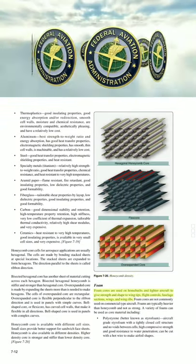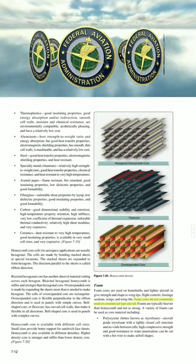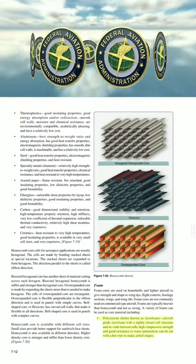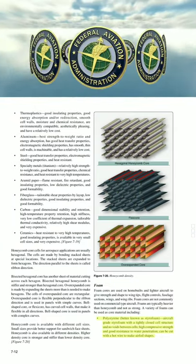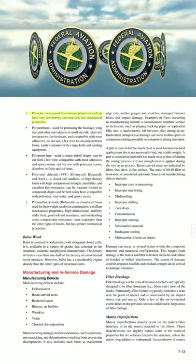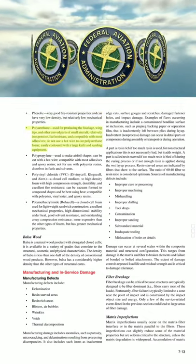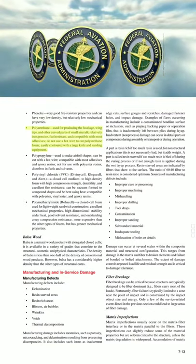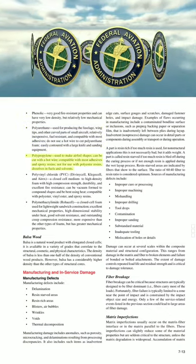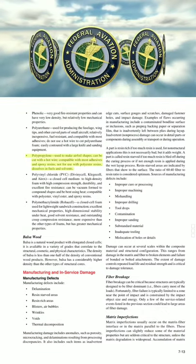Foam cores are used on foam-built and lighter aircraft to give strength and shape to wing tips, flight controls, fuselage sections, wings, and wing ribs. Foam cores are not commonly used on commercial-type aircraft. Foams are typically heavier than honeycomb and not as strong. Foam types include: polystyrene (Styrofoam) — aircraft-grade with tightly closed cell structure, high compressive strength and good water penetration resistance, can be cut with a hotwire to make airfoil shapes. Phenolic foam has very good fire-resistant properties and can have very low density but relatively low mechanical properties. Polyurethane is used for fuselage, wing tips, and other curved parts of small aircraft; it is relatively inexpensive, fuel-resistant, and compatible with most adhesives — but do not use a hotwire to cut it.